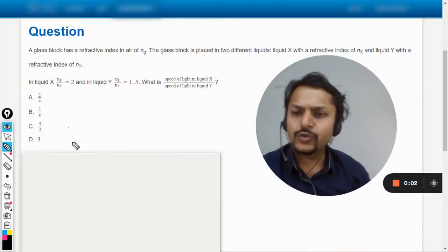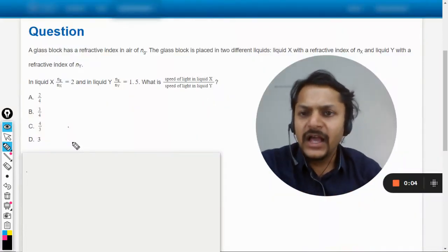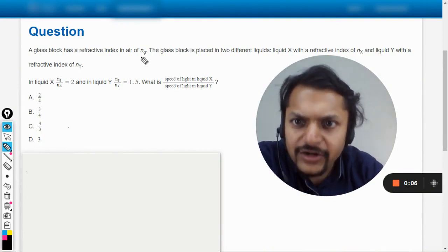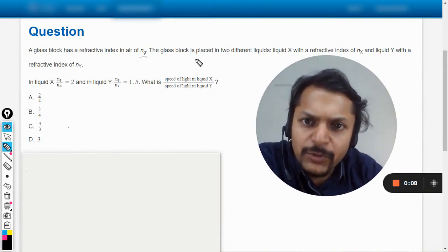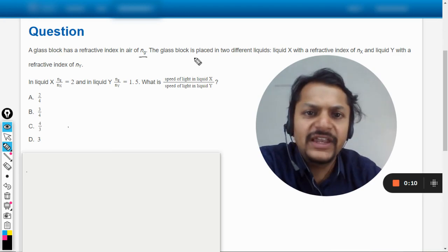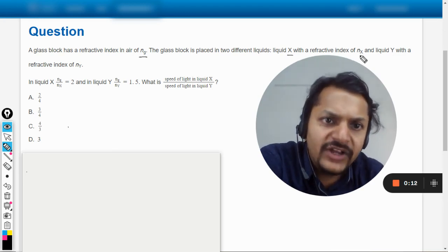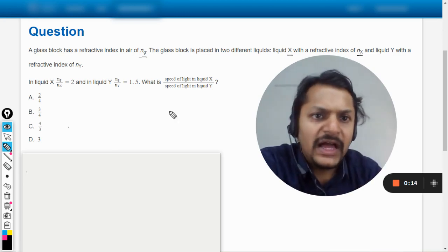Let us see what is there in this question. A glass block has a refractive index in air of NG. The glass block is placed in two different liquids: liquid X of refractive index NX and liquid Y of refractive index NY.